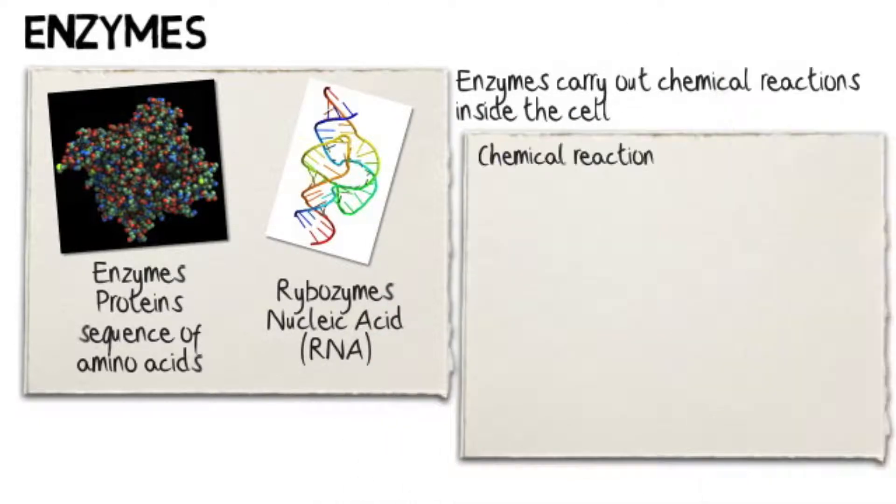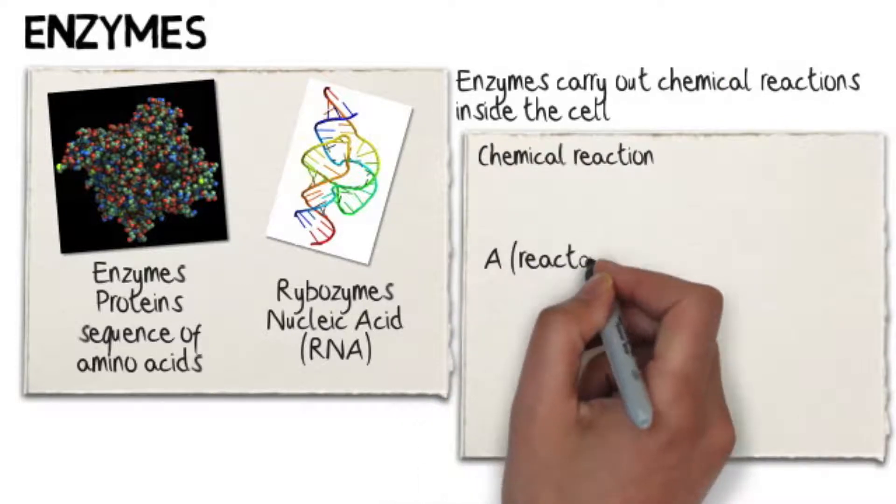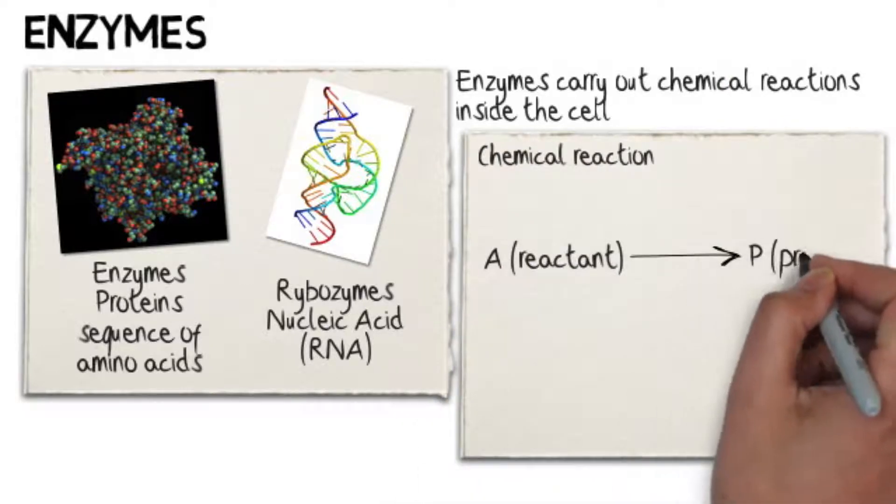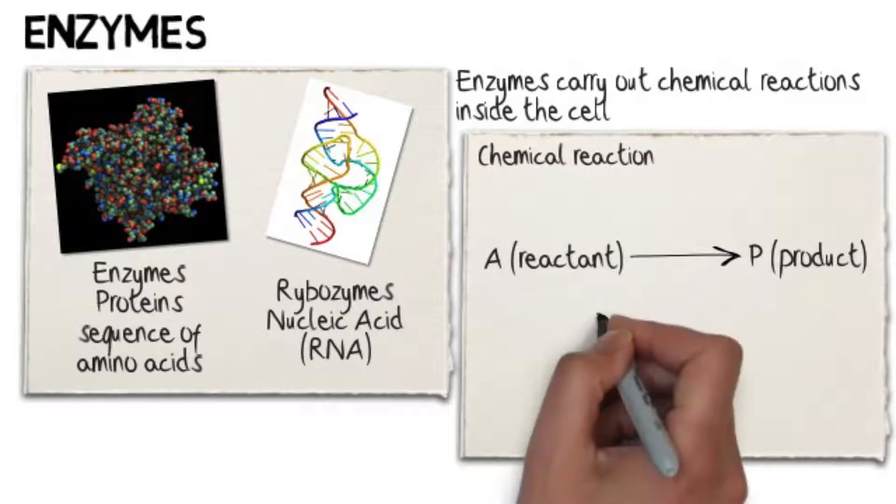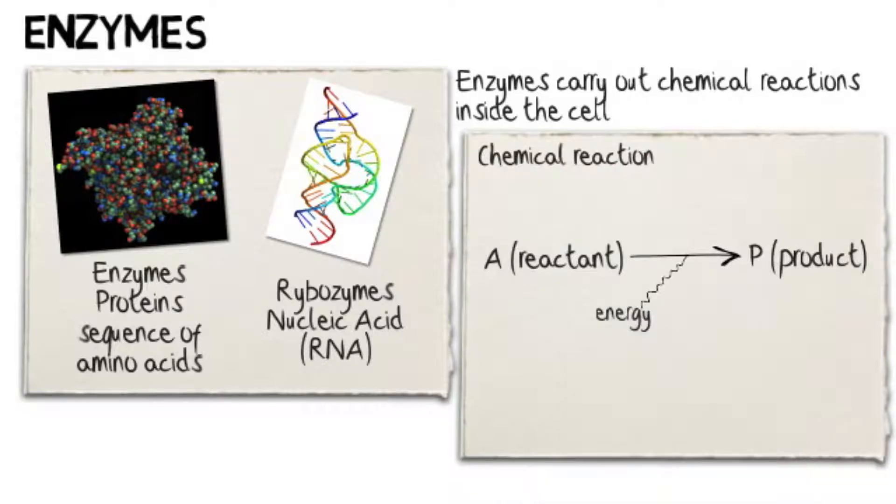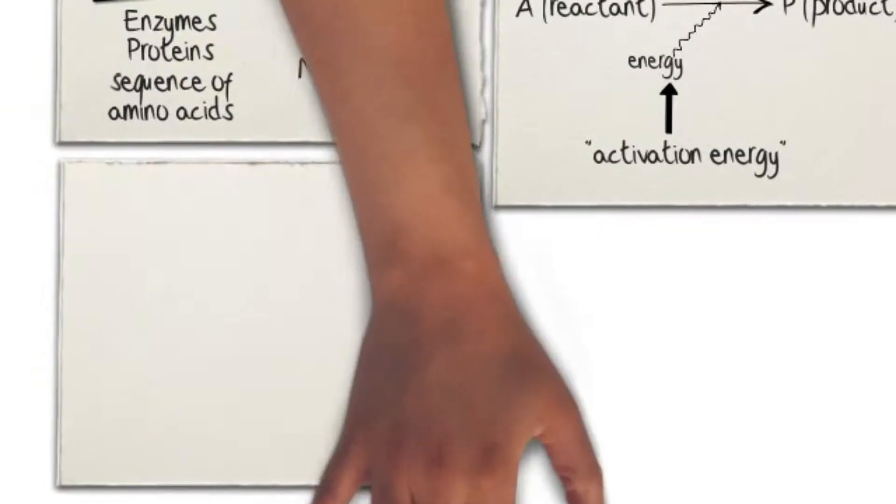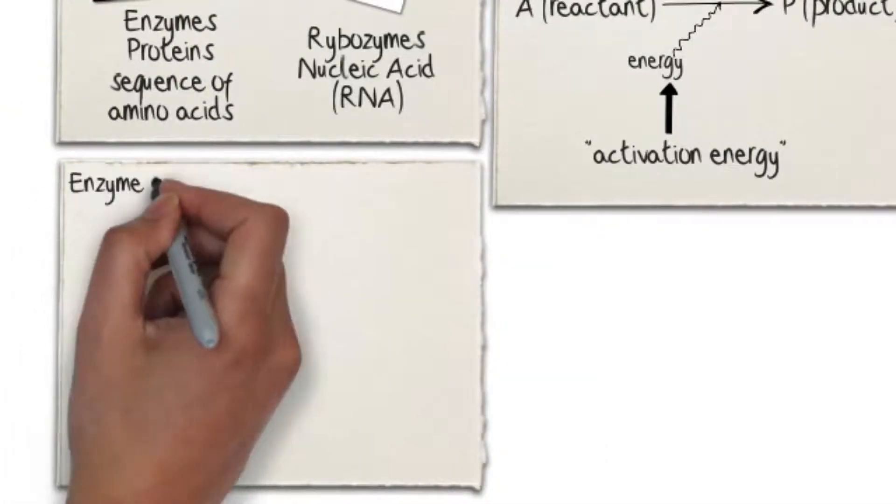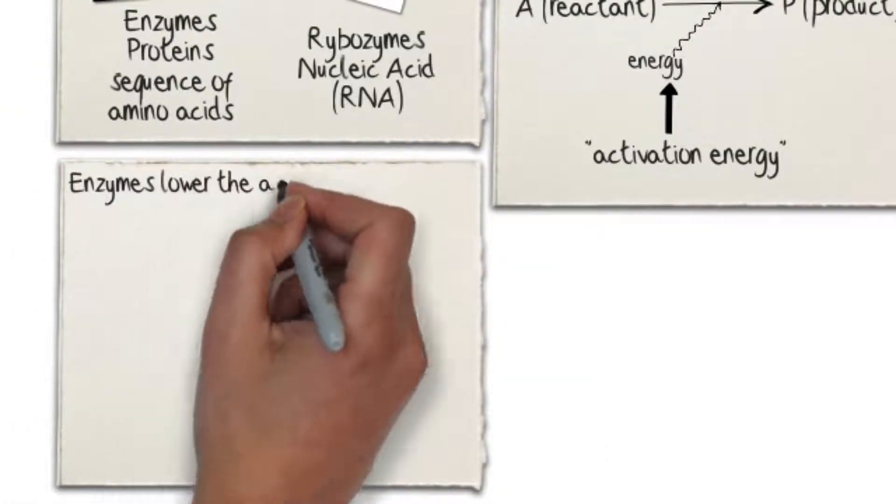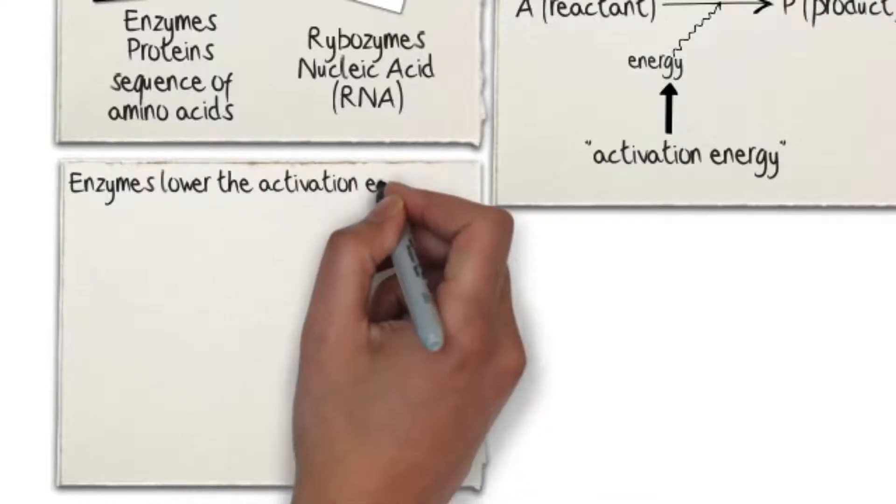All chemical reactions, including those taking place in metabolism, need a boost of energy to get started. That is what we know as activation energy, and unless that energy is reached, the reaction would not be set off. The way enzymes work is by lowering the activation energy, which in turn sets off the reaction faster.